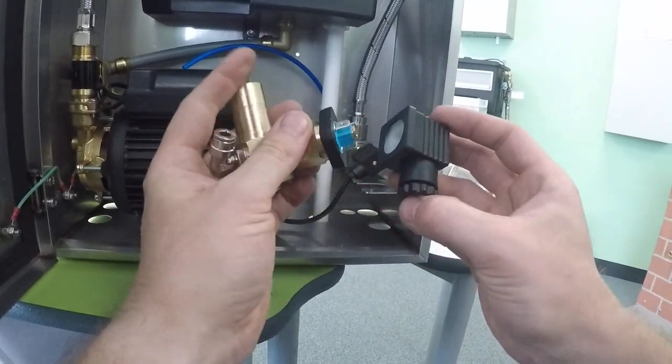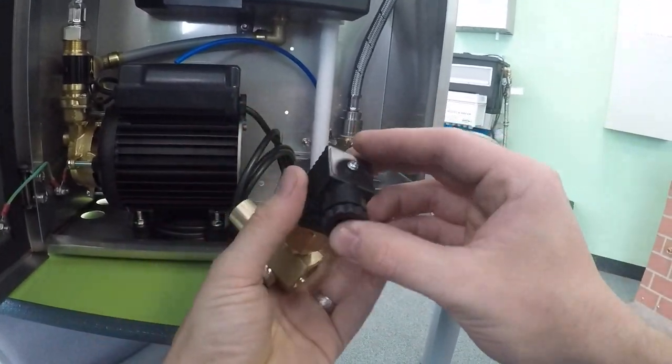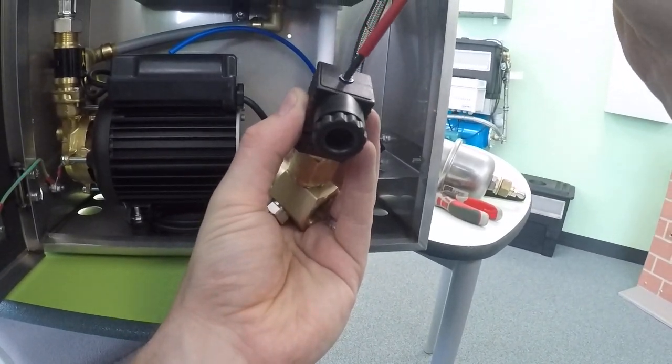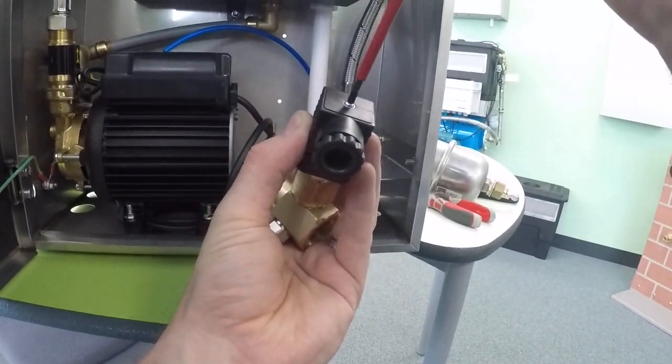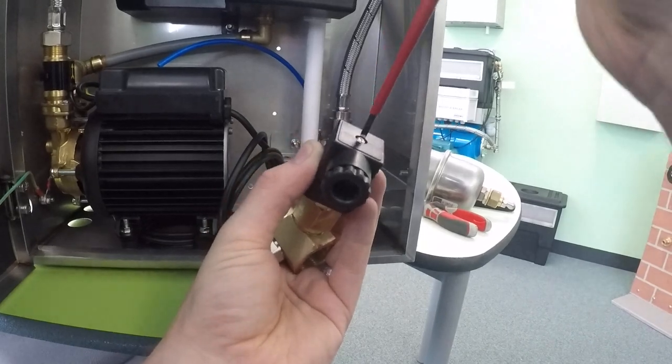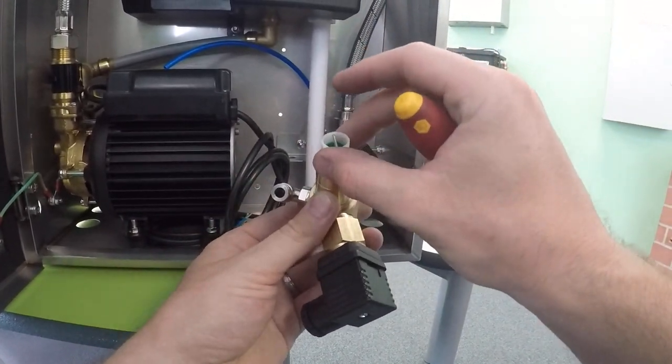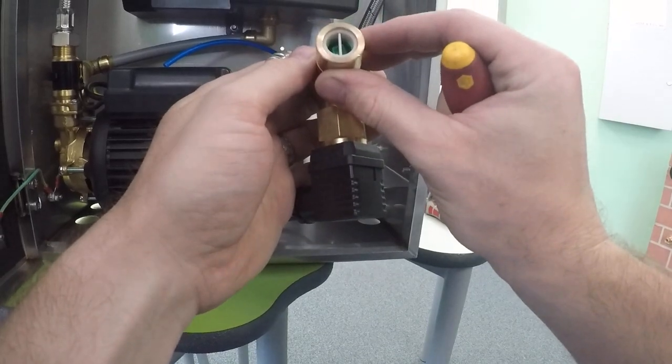Now the plug can only go on one way. Back on the way it came. Tighten that back on. Make sure you put your restrictor back in with the bar facing upwards. Just like that.